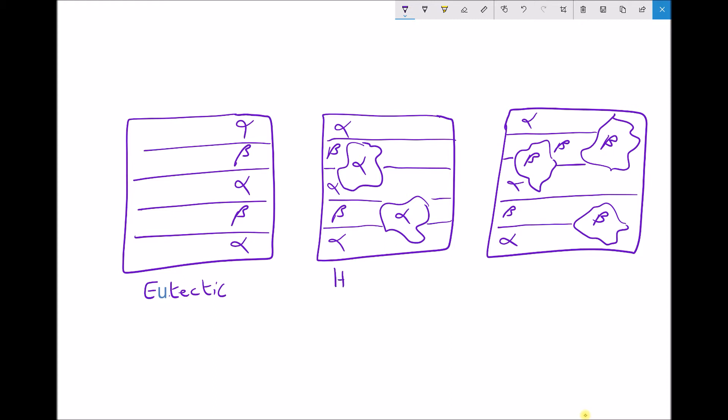We then looked at hypoeutectic, where hypo means below the eutectic composition. And what we saw there, we saw alpha solidifying out before the eutectic composition was restored, and then the laminar structure forming.